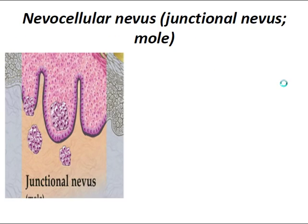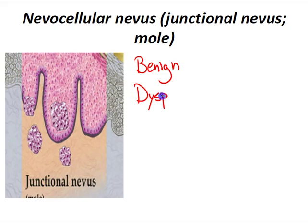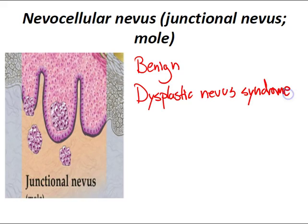Nevocellular nevus, or the mole — these lesions are commonly named birthmarks and moles. By definition, nevi are benign. If there are greater than 100 dysplastic nevi on the body, this can be a sign of dysplastic nevus syndrome — that's high yield. Since dysplastic nevi are precursors for melanoma, increased screening is highly necessary.